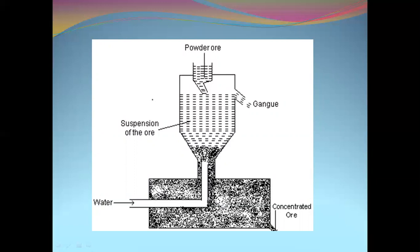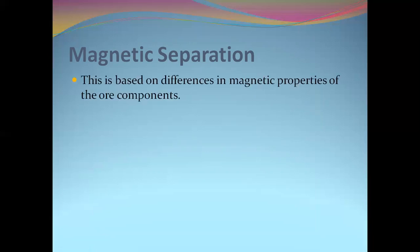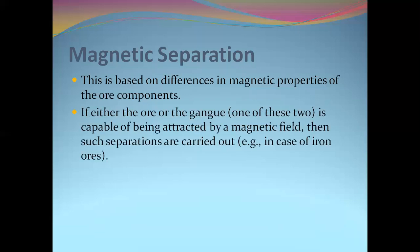Another method is magnetic separation method. The condition here in magnetic separation is either the ore particles or the gangue particles must be magnet but not both are magnet. This is the condition you have to remember. Either ores or the impurities present in it or is the magnet, but not both are magnet. That is, if either the ores or the gangue, one of these two is capable of being attracted, nothing but which is magnet, by a magnetic field, then such separations are carried out.